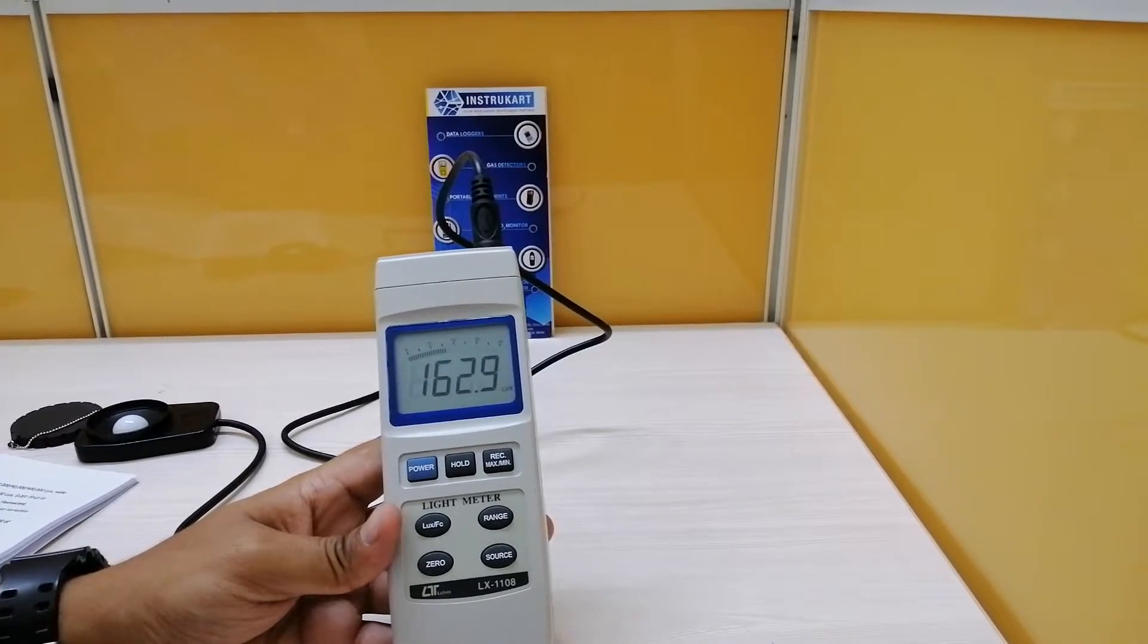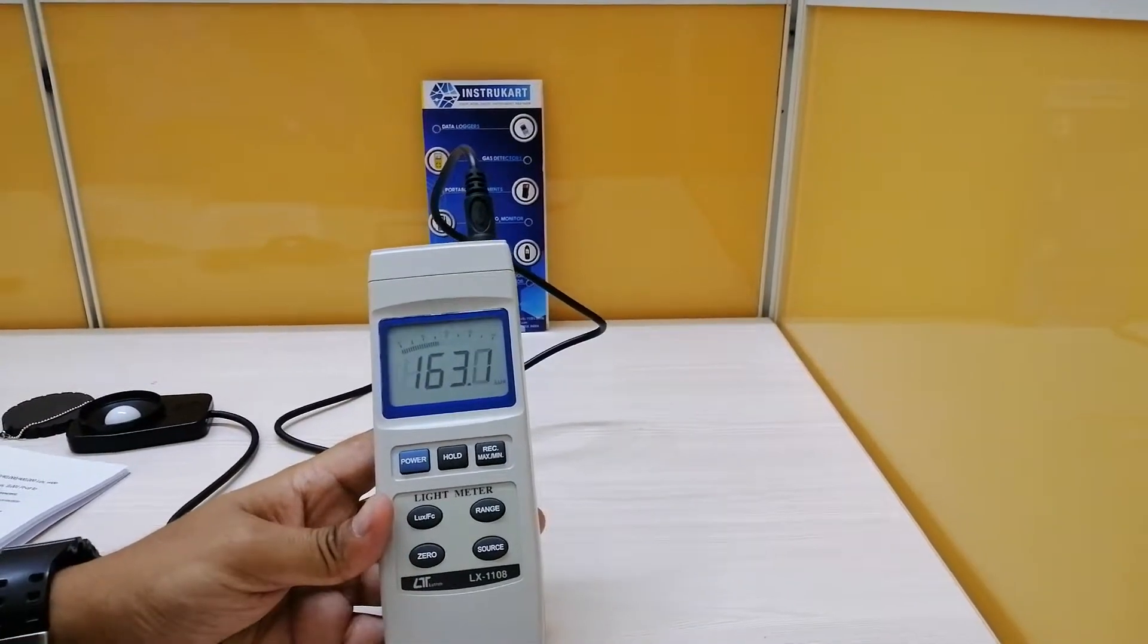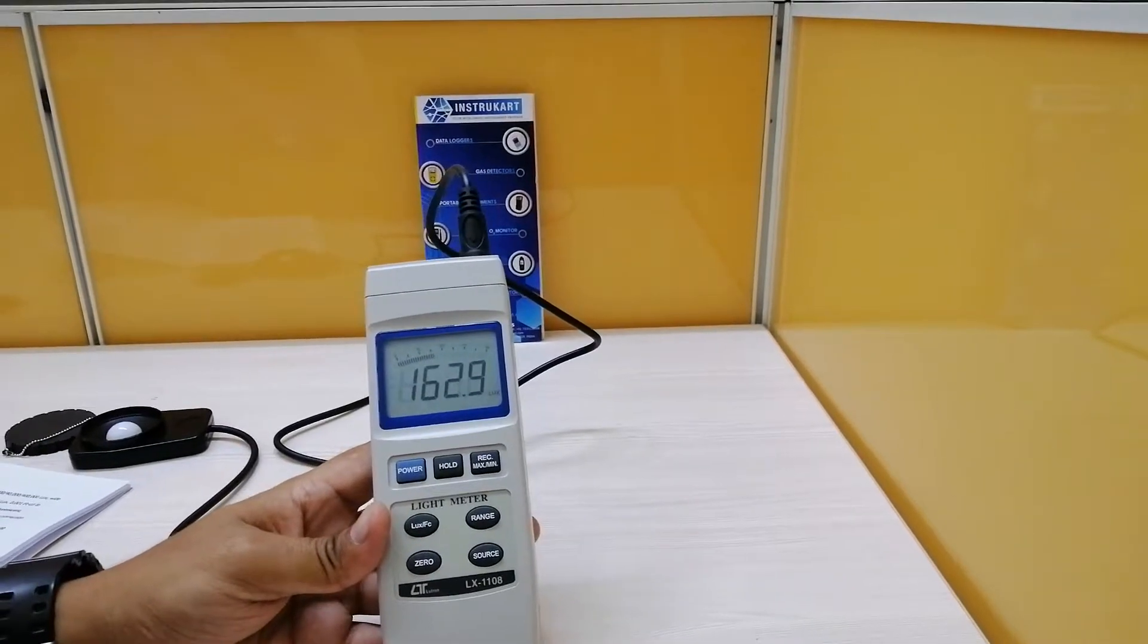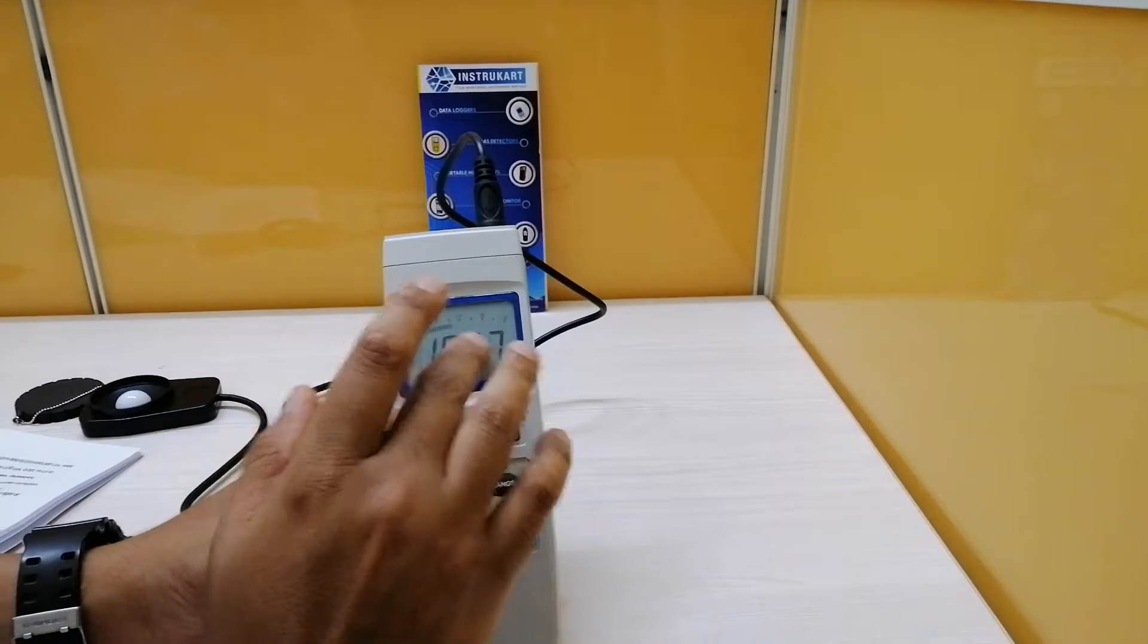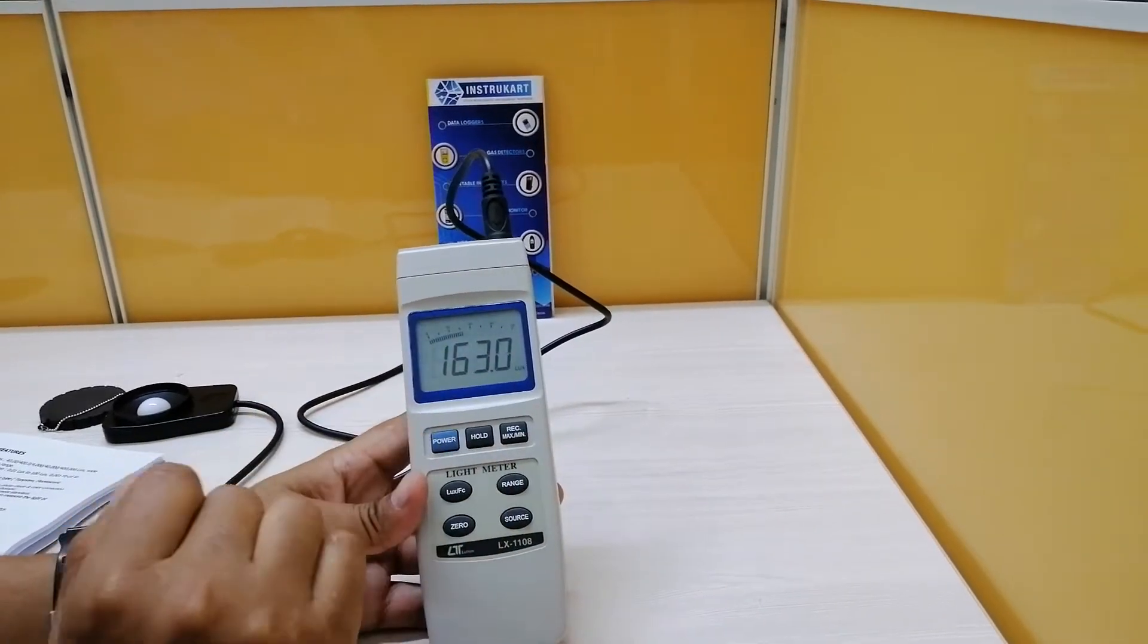It has a unit selection toggle between lux and foot candle, and a large display to show the bar graph and the indicator.